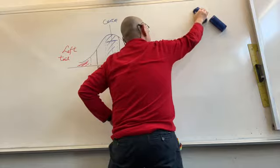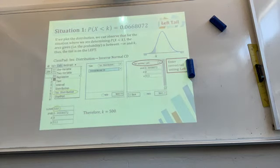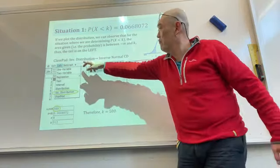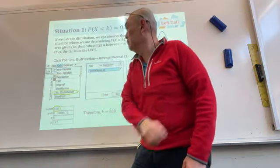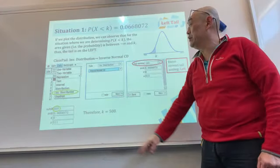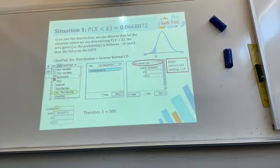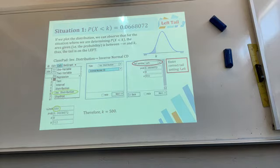For the left tail situation, go to Statistics → Inverse Distribution → Inverse Normal CD. The tail setting must be set to Left. Enter the probability and sigma and mu, then tap Next to find k.